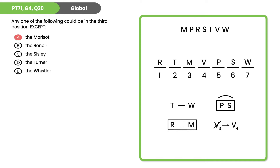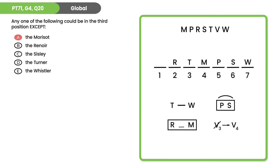Putting T into the third position requires R and M into two and four around it, but then V isn't going third or fourth — that doesn't work. But that doesn't mean we can pick D yet. Testing R in third: M goes fifth, V goes fourth, P and S into one and two, T and W into six and seven — or we could flip them. This works, so R could go third — cross it off. Testing S in third: V goes fourth, R and M slide into five and seven, P goes second, T and W into one and six. That works — S could go third, cross off C.